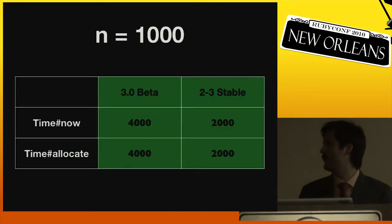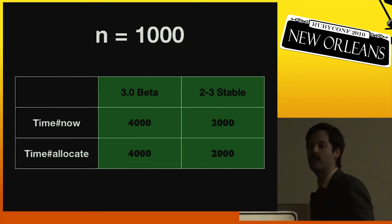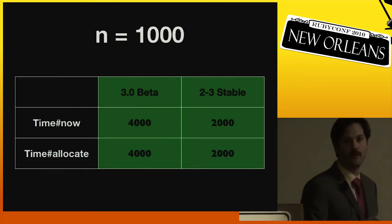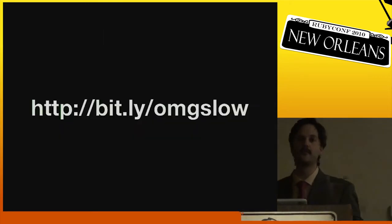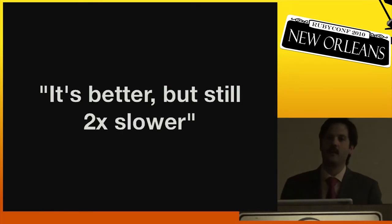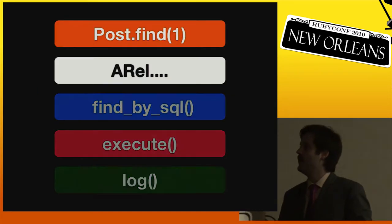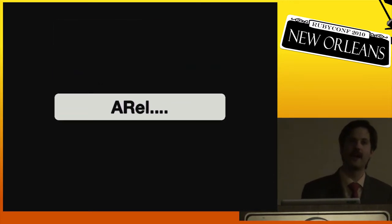I ran this for n equals one thousand on Rails 3.0 beta. I got output like this. 2.3 stable, output like this. Things changed so much between Rails 2.3 and Rails 3.0 that there wasn't much, you know, there were many different methods between the two profiles. What I did then was take a look at the methods that were in common. Most of the other different methods we weren't spending much time in. The methods that we had in common were time.now and time.allocate. What was interesting is that in 3.0 beta we were making 4,000 calls to time.now for every 1,000 iterations, where in 2.3 stable we were making 2,000 calls. So we had double the number of calls to time.now in 3.0.